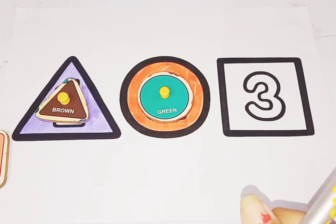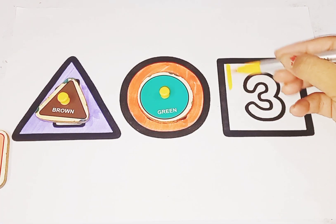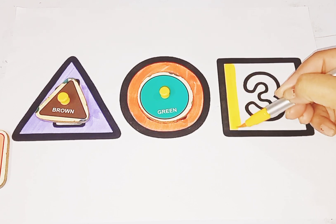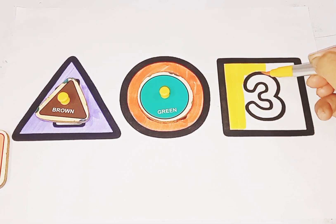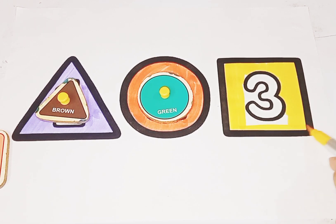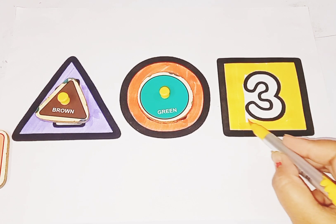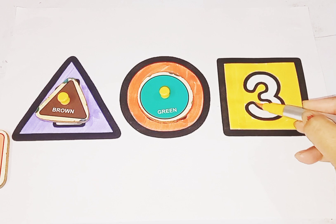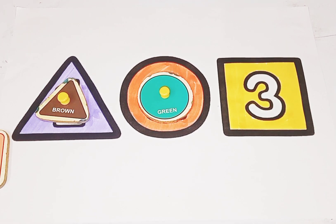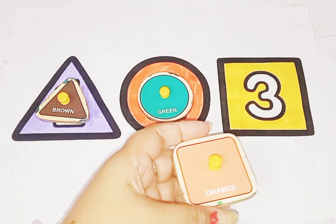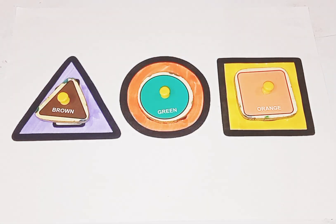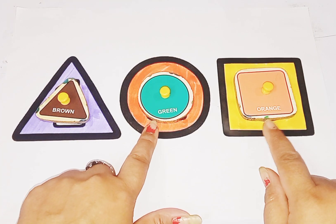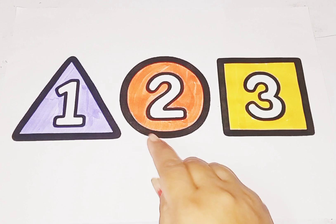Yellow color square. This is square shape. Color is yellow. Square is like this. So kids, today we learn shape: triangle, circle, square. Now we learn number and their spelling.